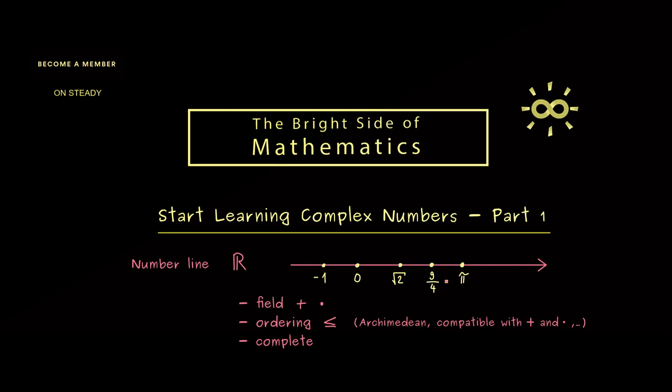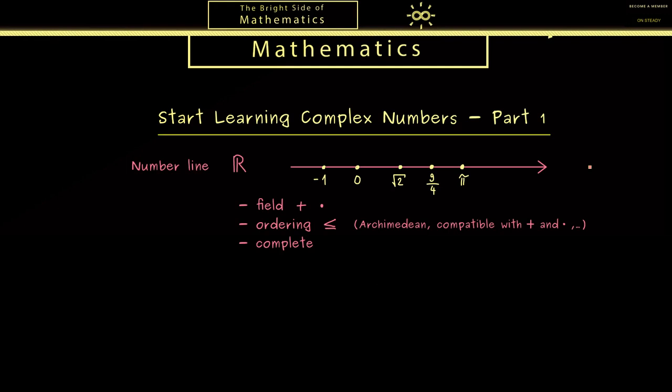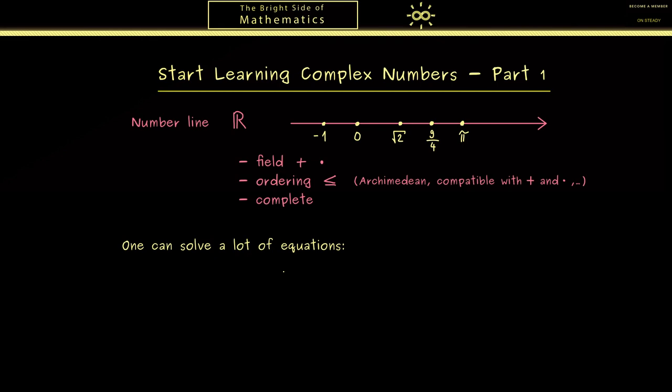Okay, then let's discuss what one can do with these real numbers here. For example, we can say that we are able to solve a lot of equations. Solving x + 5 = 1 is no problem at all. In the same way, we can also solve x × 5 = 1. So here you can see we can use the property that we have a field. Then another equation we solve is x² = 2. This one leads to the square root of 2, which is in ℝ by completeness.